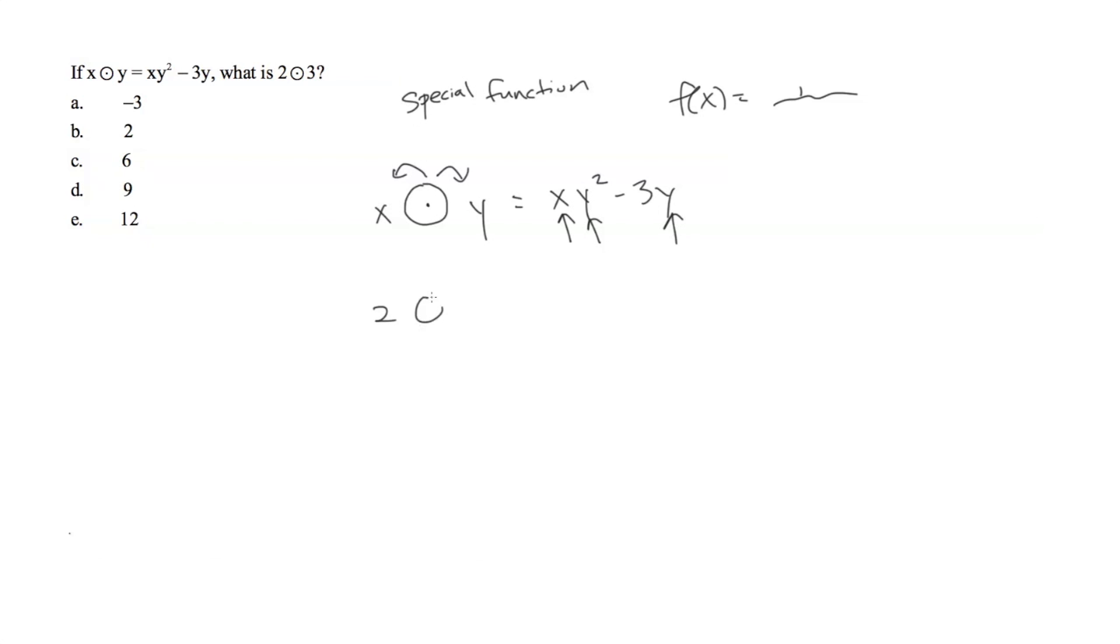So in this case we have 2 bullseye 3 where 2 is our x value, 3 is our y value. We will plug 2 in for x and 3 in for y, and again 3 in for this y as well. Then we can solve: 2 times 9 would be 18 minus 3 times 3 which is 9, and so the final answer is 9.